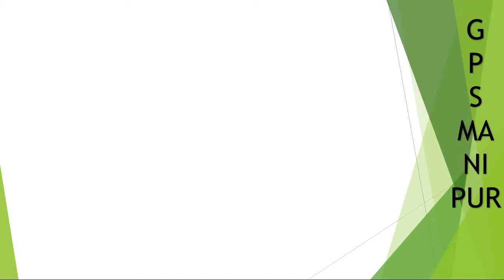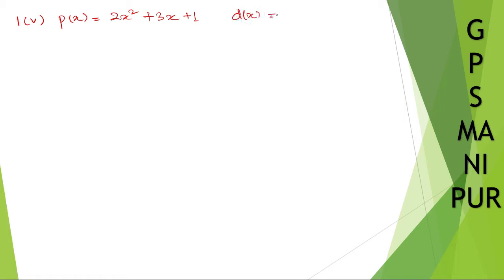We are doing exercise 2.1, question number 1, Roman numeral 5. p(x) is equal to 2x squared plus 3x plus 1, and d(x) is equal to 2 plus x. Solution.